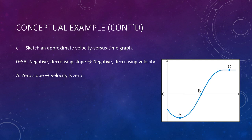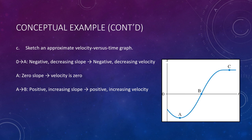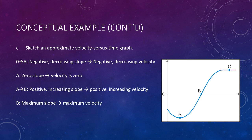At point A, the slope is zero, which indicates we should be at zero on our velocity graph. From A to B, we have a positive slope — pointing upward and to the right — and it's increasing. We go from zero slope, a horizontal line, to a steeper and steeper point at B. So our velocity should be now positive and increasing. At B, we have the steepest slope, so B should be the maximum velocity — the top portion of our velocity graph.